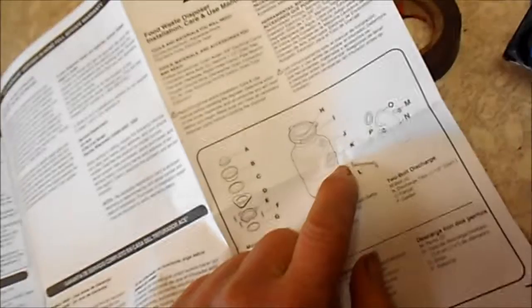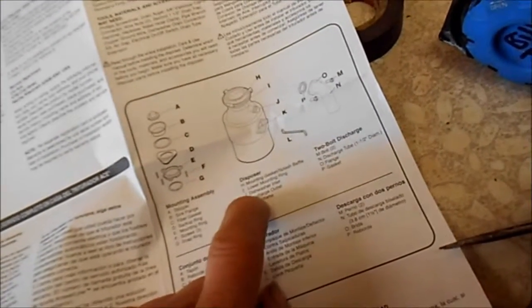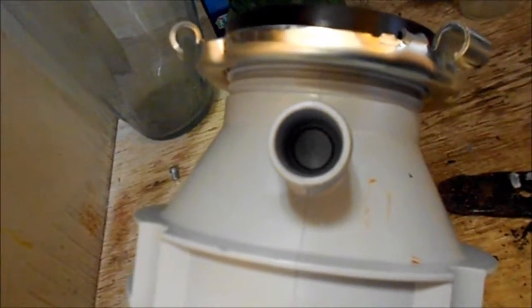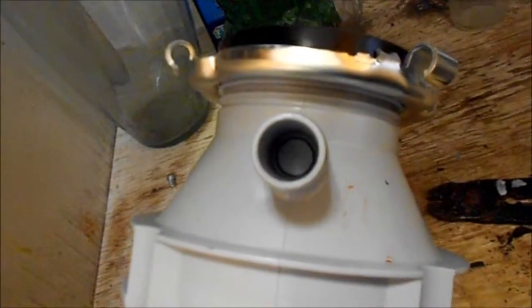Okay, flipping around. Okay, here we are. Right side up. So this part here, part J, which is dishwasher inlet. And if you notice on your disposer, that thing is plugged up. It has a cover on it.